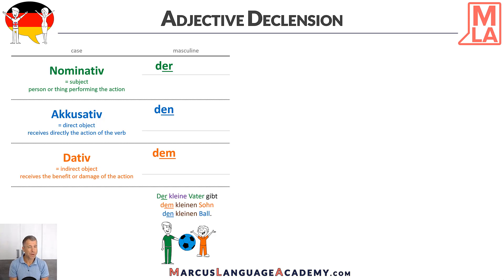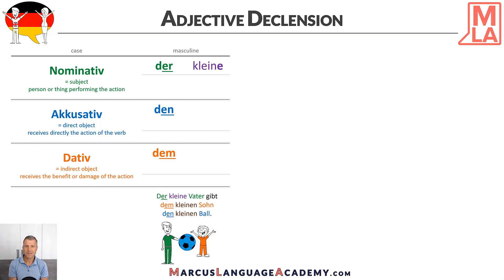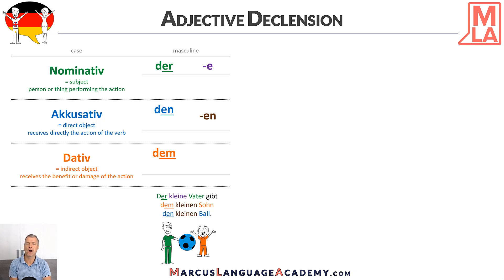You see that in the first part we have der kleine Vater, and then we have dem kleinen Sohn and den kleinen Ball. When we have the nominative case in masculine with the definite article, we add to our adjective an -e. In accusative, the masculine article changes, so when it changes, we need to add -en to our adjective.